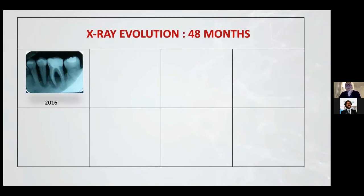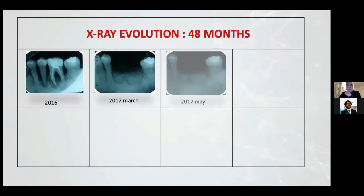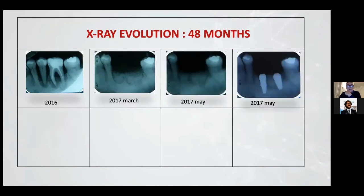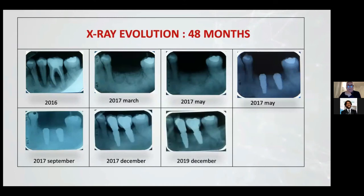What happened in X-ray evolution? This is an example from 2016 to 48 months. It's possible to observe the granules after some months, and after one year they disappear completely. In this case, it's impossible to understand where the defect was and where the new bone was.